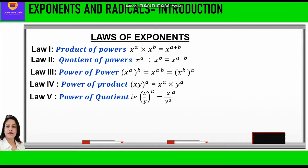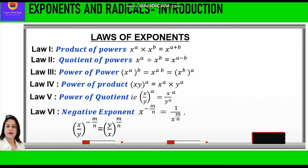The fifth law is power of quotient. It is x upon y raised to power a is equal to x raised to power a upon y raised to power a. The sixth law is negative exponent, which says x raised to power minus m by n is equal to 1 upon x raised to power m by n. So if we have to convert the negative exponent into positive, we just have to reciprocate the base.